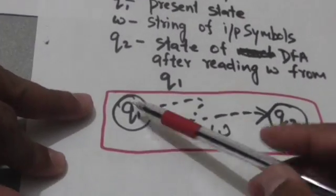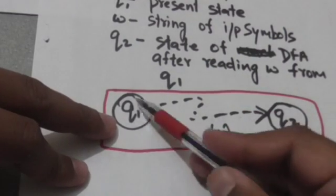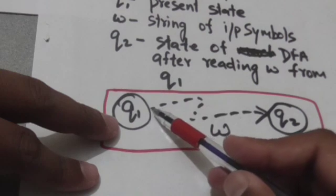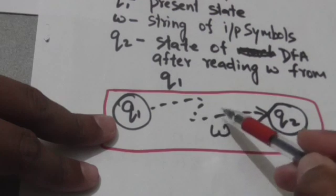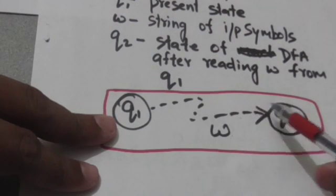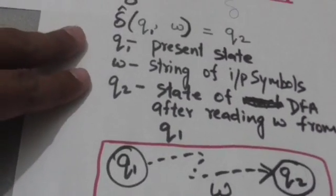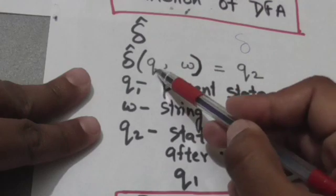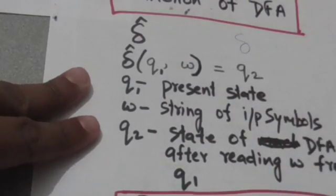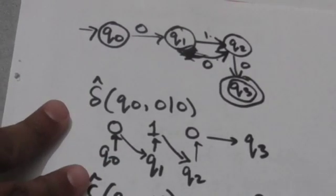Now, if the present state of the machine is q1 and it reads a string of input symbols w, and after reading this string it comes to state q2, this can be described as delta cap of q1 and w equals q2.